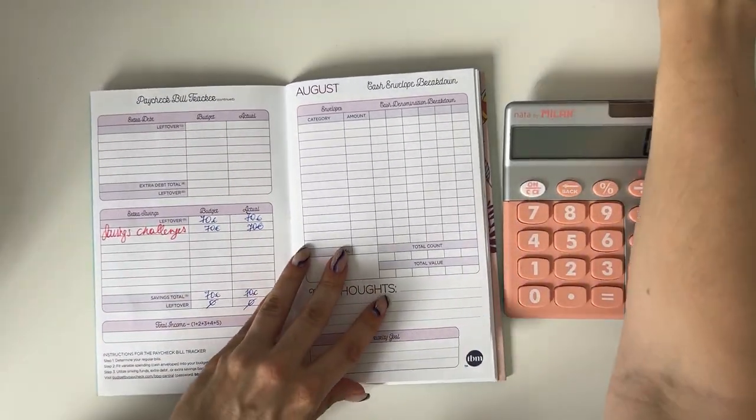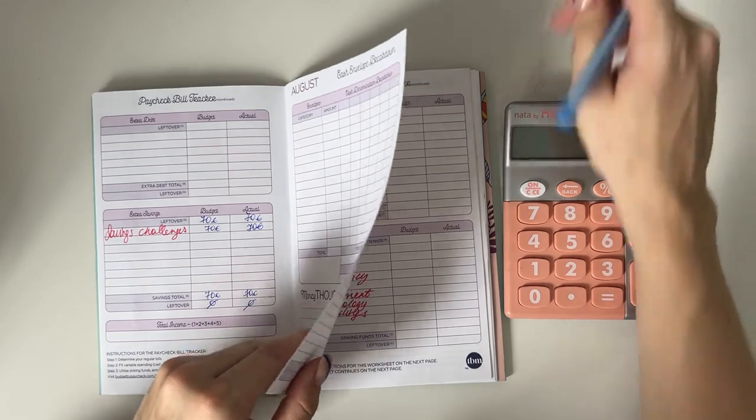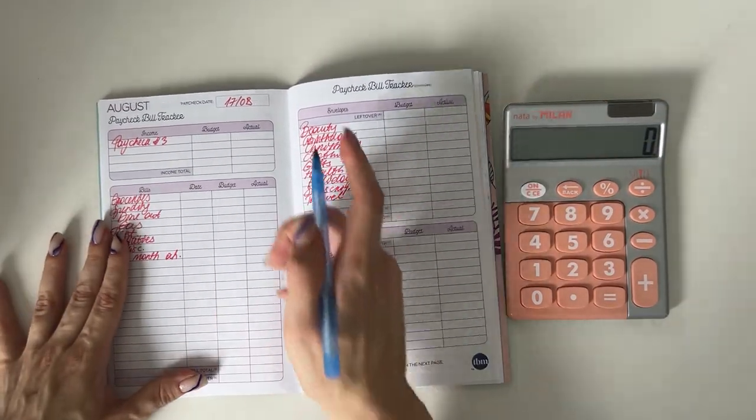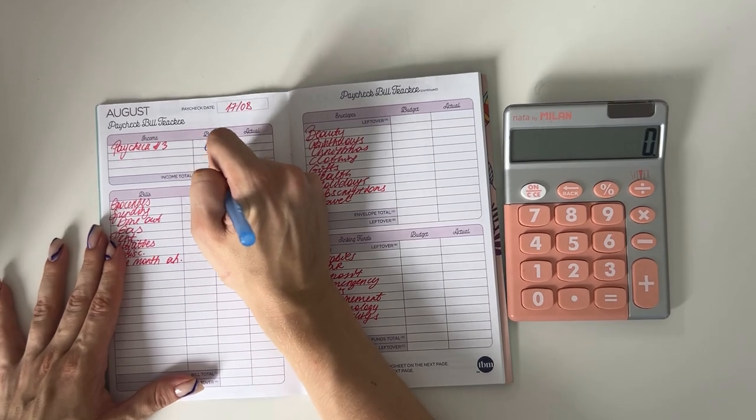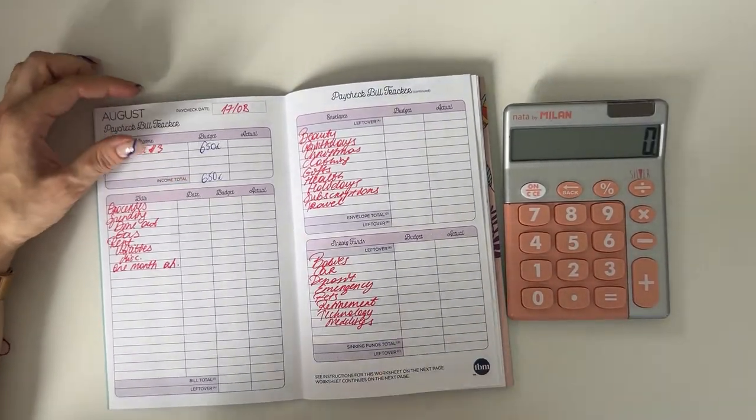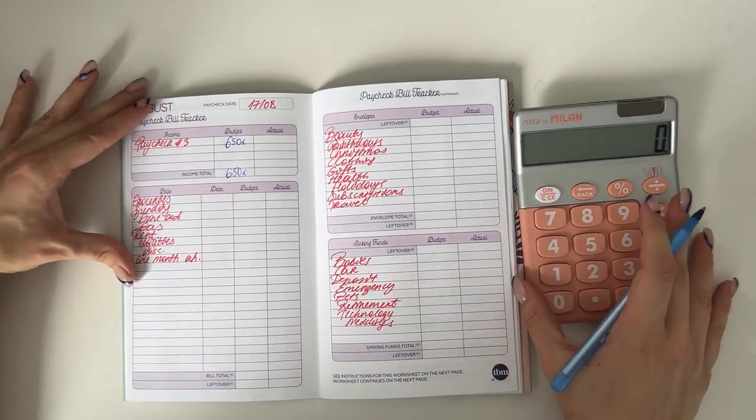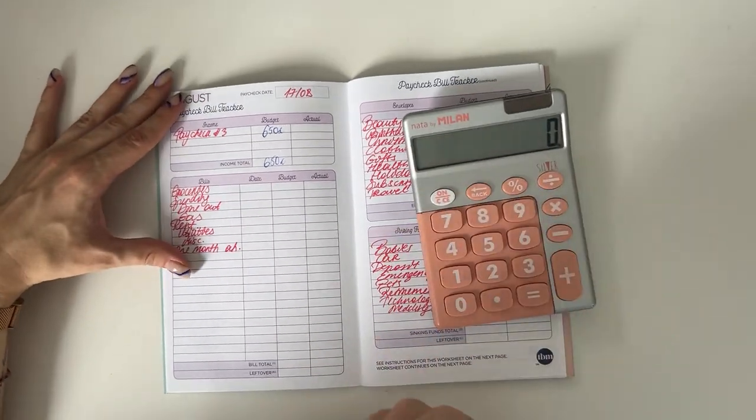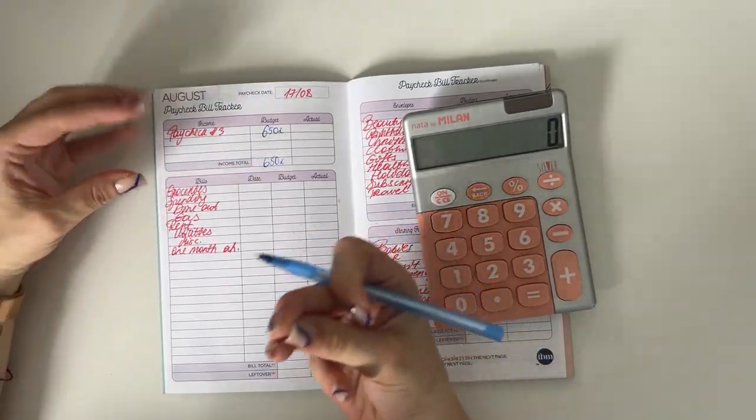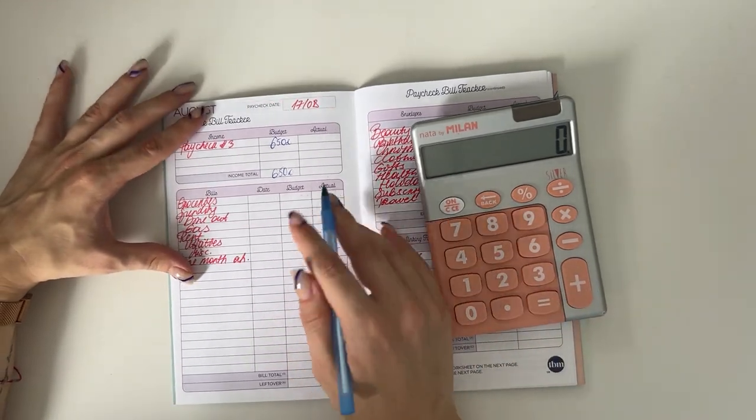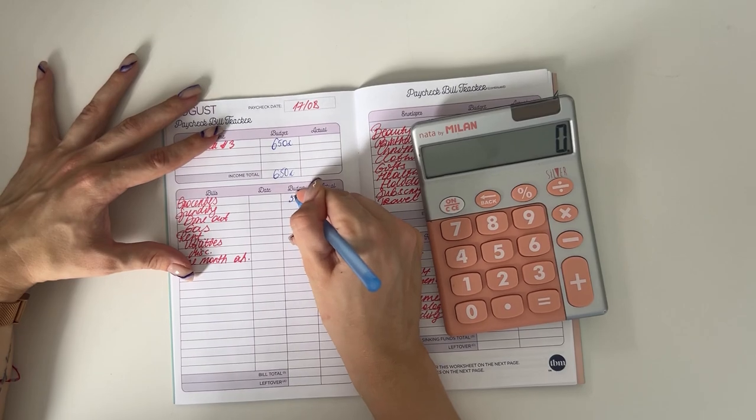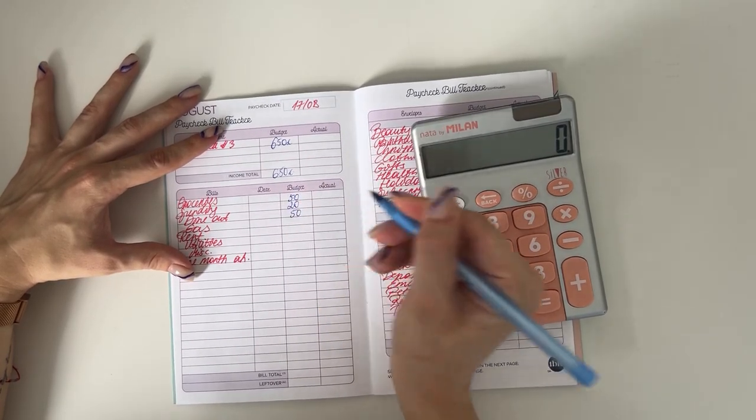And we did put that €70 into our savings challenges. So everything is correct with the actual amounts for week two. And now let's set up week three. So week three, we have a budget of €650. As I do have a new job, I can now allocate a little bit more in my funds, which is great because it will help me build my savings goals faster.